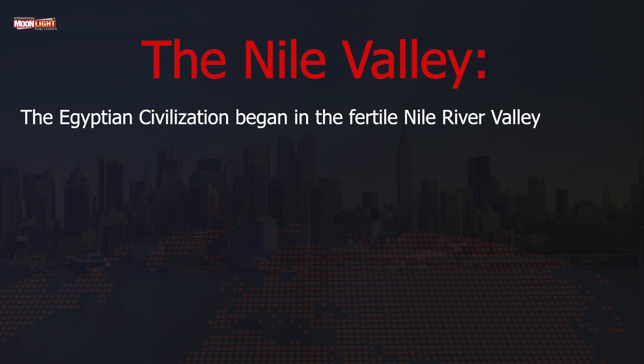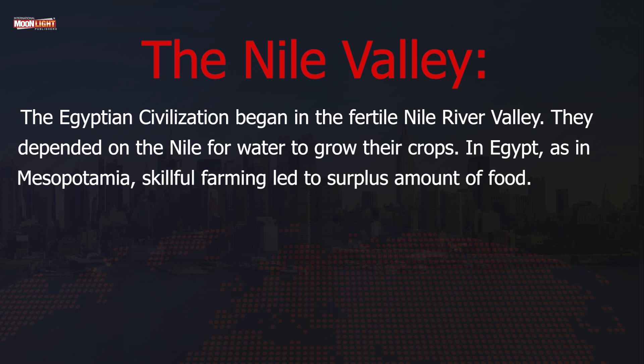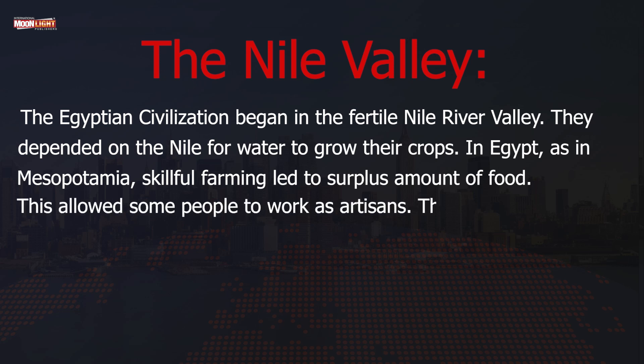The Egyptian civilization began in the fertile Nile River valley. They depended on the Nile for water to grow their crops. In Egypt, as in Mesopotamia, skillful farming led to a surplus amount of food. This freed some people to work as artisans instead of farmers.